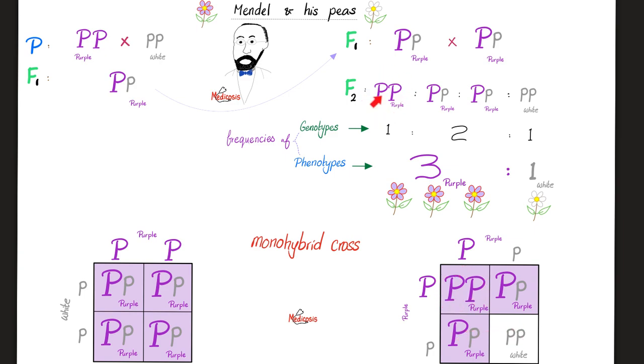One-fourth was capital P, capital P, which appears purple. One-half was capital P, small p, which appears purple. How about small p, small p, only 25%, or one quarter, which appeared white.